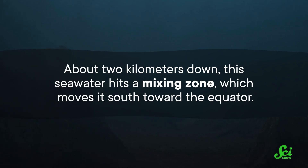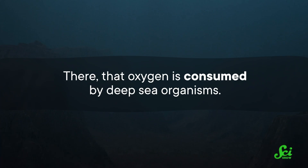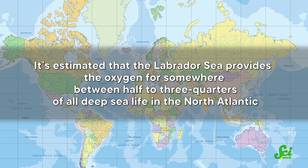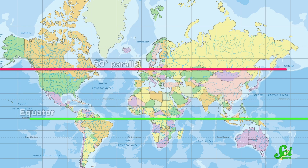About two kilometers down, this seawater hits a mixing zone, which moves it south toward the equator. There, that oxygen is consumed by deep-sea organisms. Because the oceans are all connected, it could even make its way all the way to the Pacific and Indian oceans. In fact, it's estimated that the Labrador Sea provides the oxygen for somewhere between half to three-quarters of all deep-sea life in the North Atlantic, between the equator and 50 degrees north.